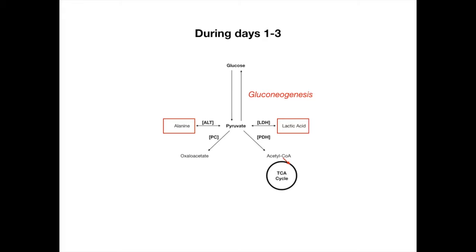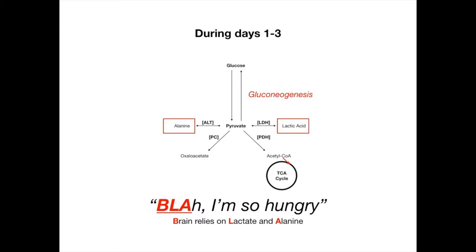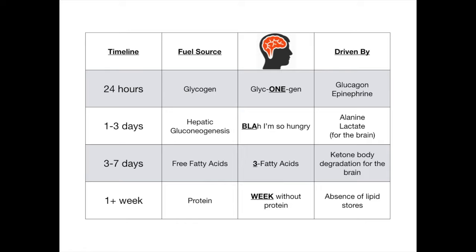How do you remember this? The mnemonic is 'Blah, I'm so hungry' — because beyond one day of fasting, you feel like crap and you're hungry. The B-L-A in 'blah' tells you that the Brain relies on Lactate and Alanine. B for brain, L for lactate, A for alanine. Blah, I'm so hungry — I've been fasting between one and three days. So between one and three days, hepatic gluconeogenesis will pull alanine and lactate to provide energy for the brain.